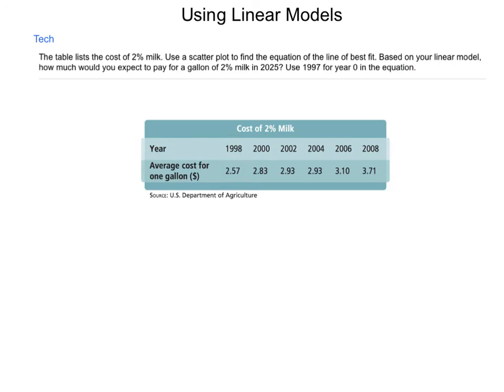So the table lists the cost of 2% milk. We're going to use a scatter plot to find the equation of a line of best fit. And then based on our model, how much would we expect to pay for 2% milk in 2025? We're going to use 1997 as our year 0. So a lot of things going on here. Let's break it down.